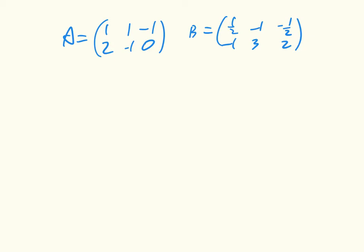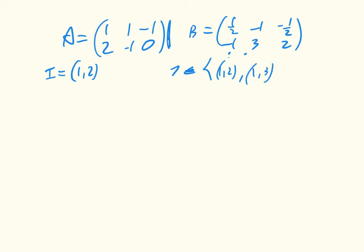The first non-trivial case is supports of size two. For the row player, the only support of size two is {1, 2}, since they only have two strategies. For the column player, there are three possibilities of size two: j ∈ {1,2}, j ∈ {1,3}, or j ∈ {2,3}. Since we only consider non-degenerate games, we only consider supports of the same size, so we don't consider the column player playing all three.